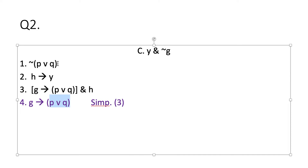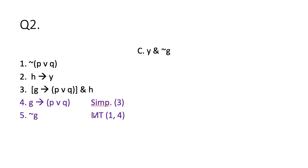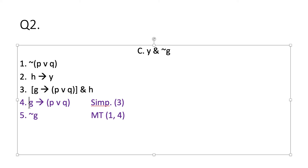I have on line one a negation of the consequent of this conditional, so I know I can do modus tollens on lines one and four to get a negation of the antecedent of that conditional: not G. I put MT for modus tollens and cite both lines — one and four. Now I have not G, one half of my conclusion.